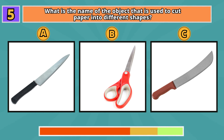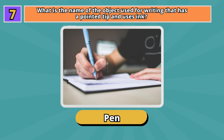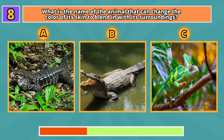What is the name of the animal that can swim and has a flat tail? Beaver. What is the name of the object used for writing that has a pointed tip and uses ink? Pen.